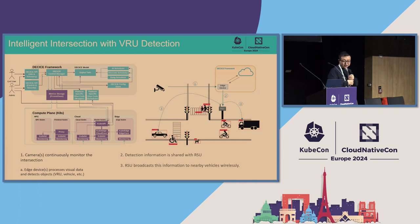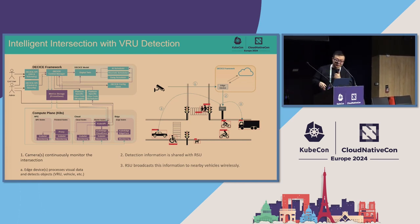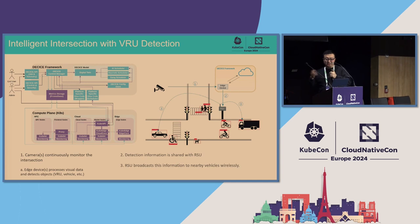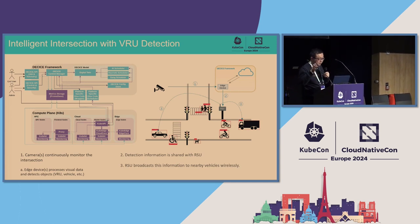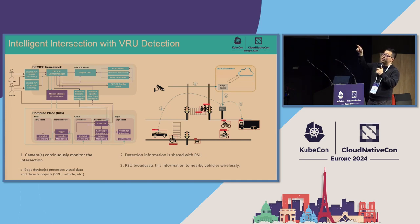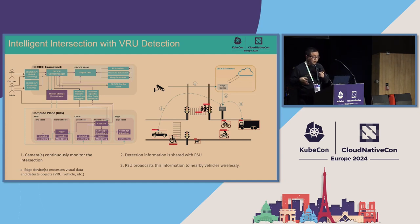Another interesting use case is a roadside intelligent transportation system. The architecture includes cameras and roadside units at edge nodes. A camera monitors an intersection and sends video or pictures to the edge node, which does processing and analysis, then sends results to vehicles or pedestrians through the roadside unit. KubeEdge manages the edge nodes from the cloud and also manages the roadside units and cameras.